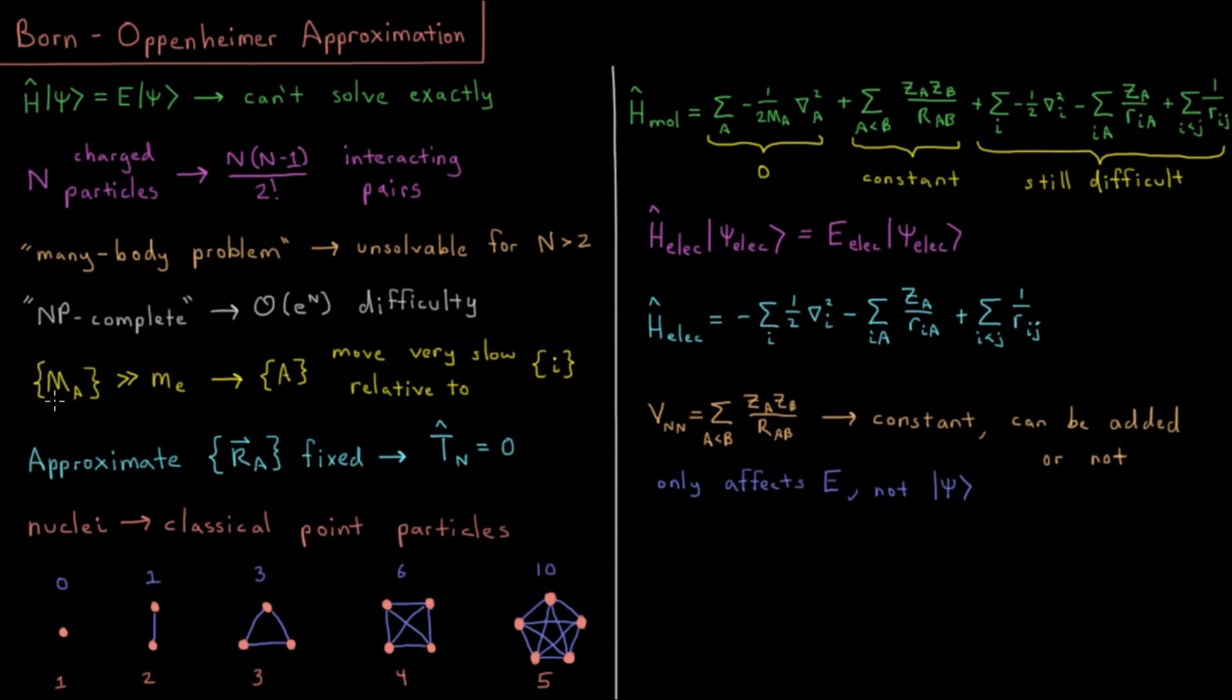Whatever other nuclei there are, whatever their mass number is, that's going to be thousands, tens of thousands of times greater than that electron mass. So what this is going to mean is that because of that very high mass, our nuclei are going to move very slow relative to our electrons. The set of nuclei is going to move slow relative to the set of all electrons.